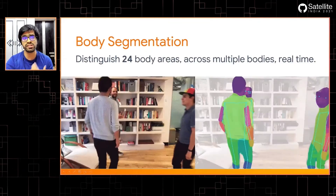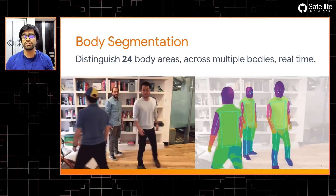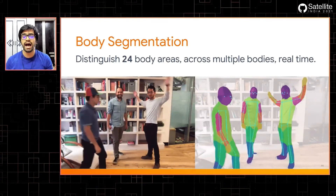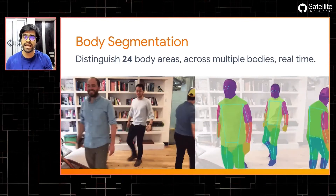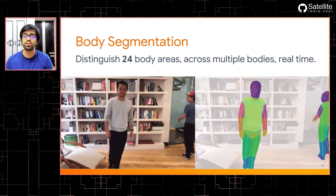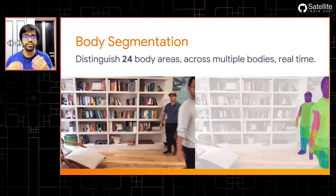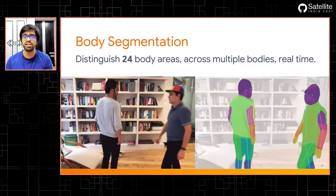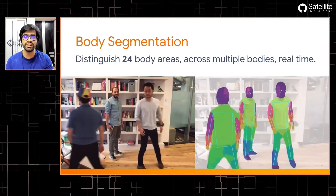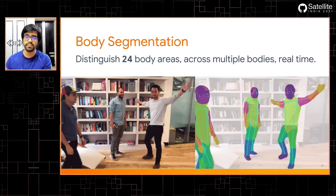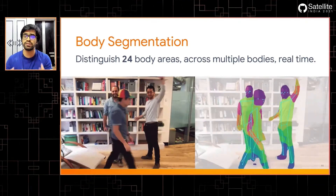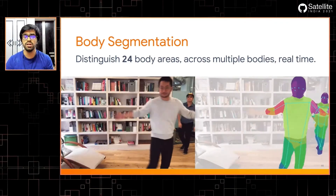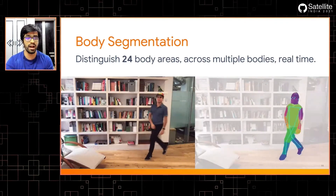There's also a body segmentation model that can distinguish 24 different body areas in human bodies, and it can do that in real time across multiple different bodies — it doesn't need to be just one single body. As you can see in this video, three different individuals' bodies are being segmented from the background in real time, without any performance overhead at all.